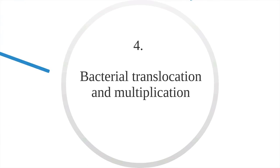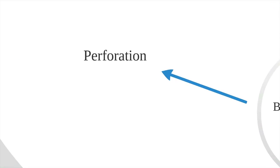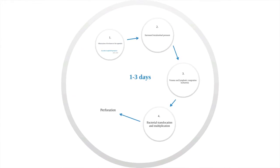This loss of normal function allows bacterial translocation and multiplication within the appendix. Occasionally, perforation then occurs due to weakness in the wall, secondary to necrosis and bacterial infection. It is important to remember that these events occur rapidly, with the complete cycle taking anywhere from one to three days. This is why it is important to recognise and treat early, if possible.